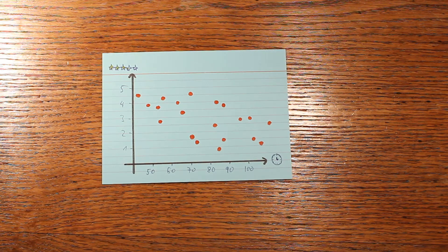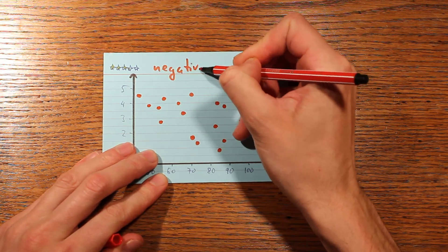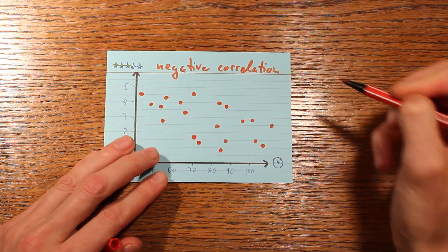However, if the trend would be reversed, like here, you can see that the longer movies tend to get the worse ratings. And then we'd say that there's a negative correlation between length and rating.